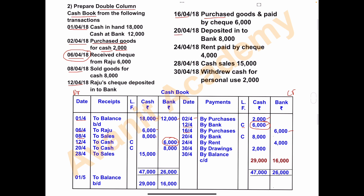On 20th April, cash of rupees 8,000 is deposited into the bank. The journal entry is: bank account debited to cash account. On the debit side, write 20th April, 'to cash account', and record 8,000 in the bank column. On the credit side, write 'by bank account' and record 8,000 in the cash column. This is also a contra entry.